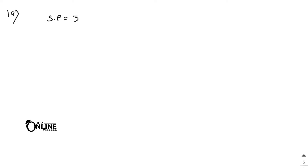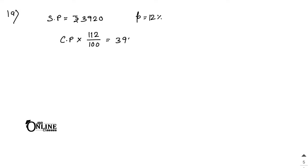Sum number 19: By selling an almira for rupees 3,920 a shopkeeper gains 12%. SP equals 3,920 and profit percentage equals 12%. If sold for rupees 4,375, find the gain or loss percentage. So CP into 112 by 100 equals 3,920.